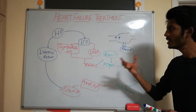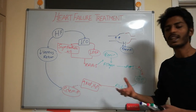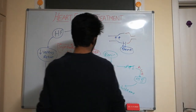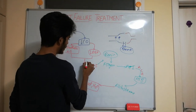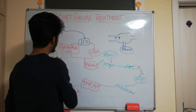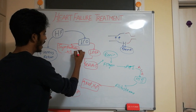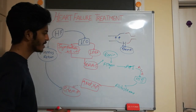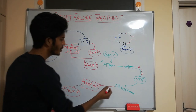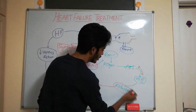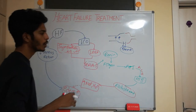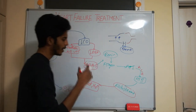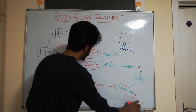We can have a group of drugs associated with the renin-angiotensin system, a group of drugs acting on the sympathetic nervous system, a group of drugs acting on aldosterone, and a group of drugs that decrease vascular resistance. Let's see them one by one.